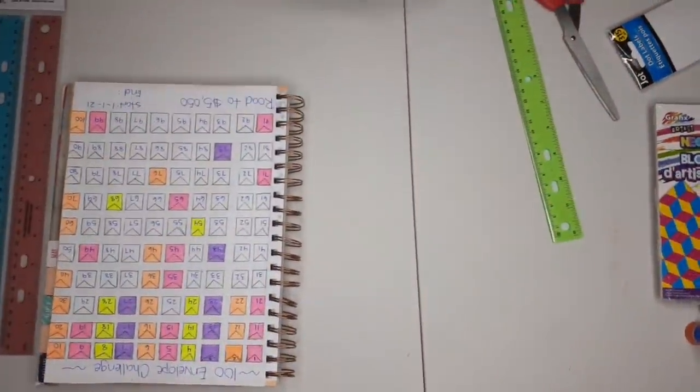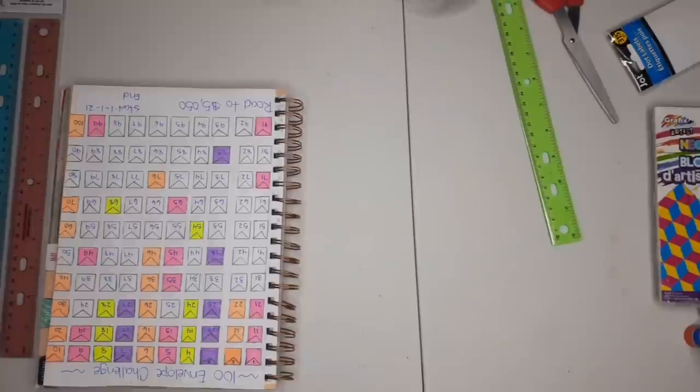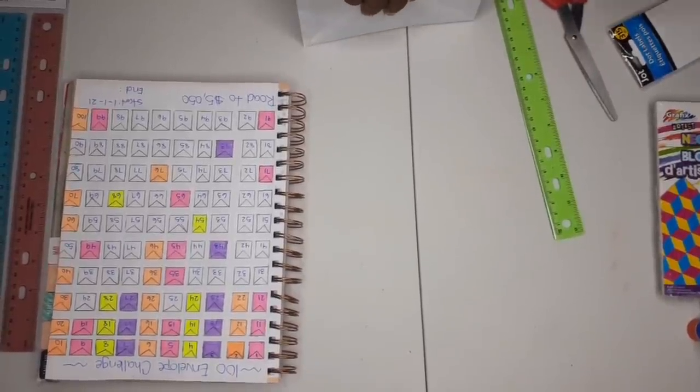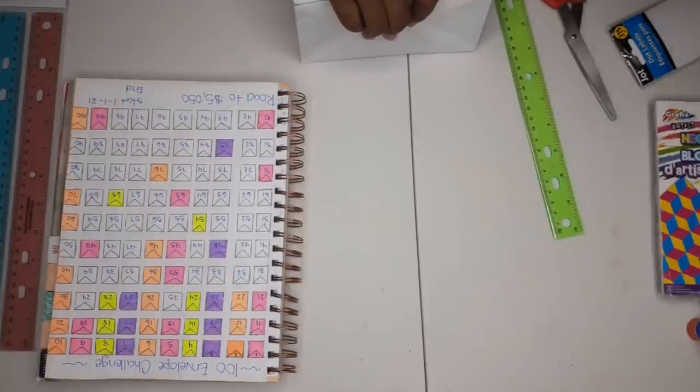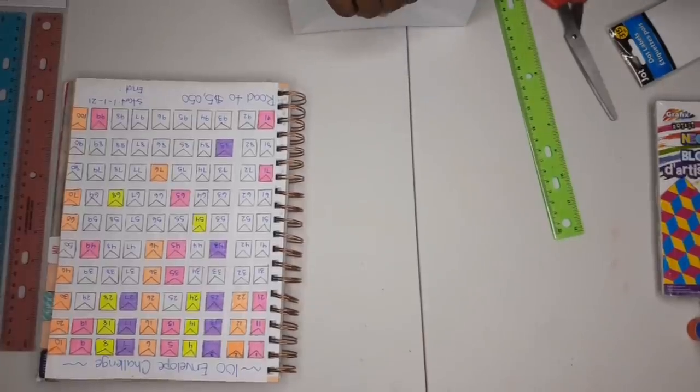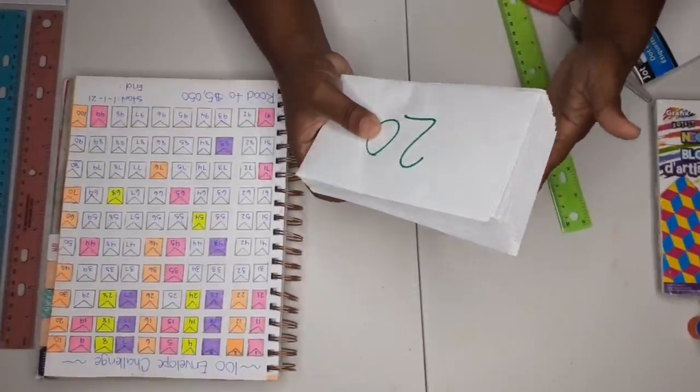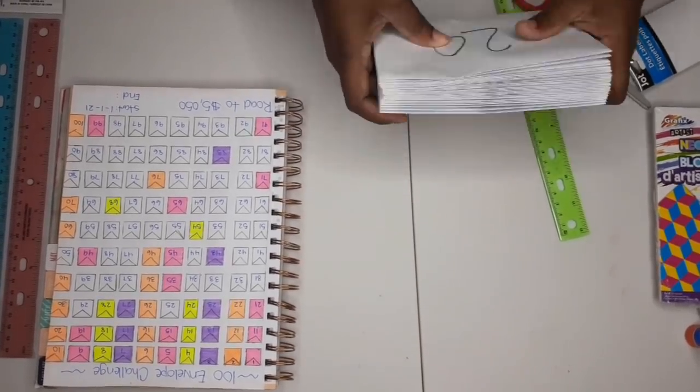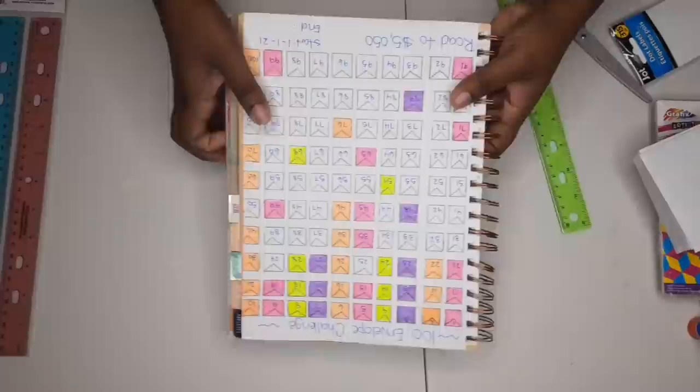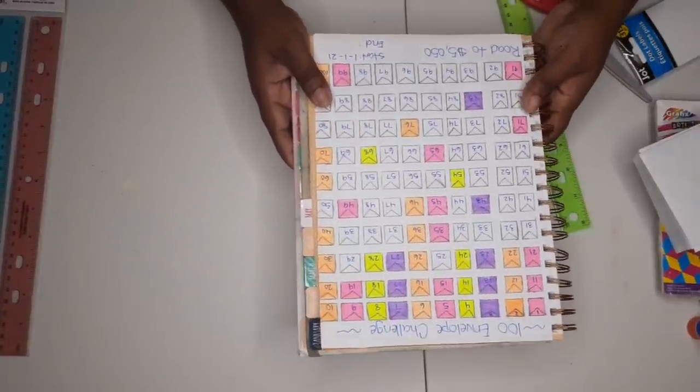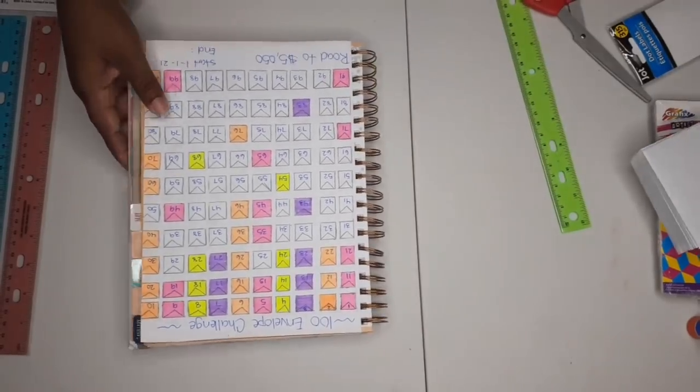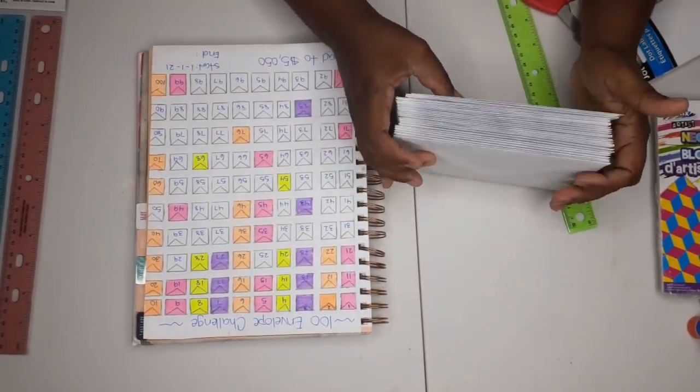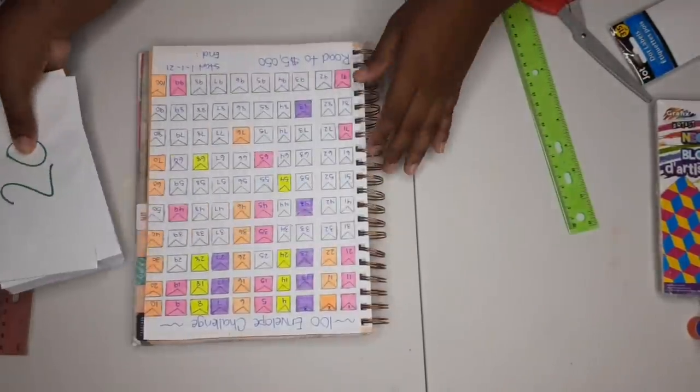I wish I had a laminator first of all, but I don't and I'll probably invest in one later on. But for now, we are going to do a DIY Dollar Tree cash envelope mini envelope video. This is how I'm doing my 100 envelope challenge. I just redid it and it's so pretty.